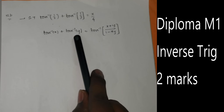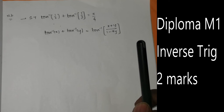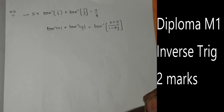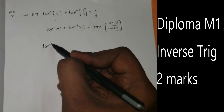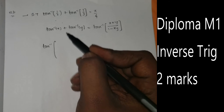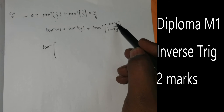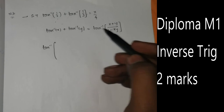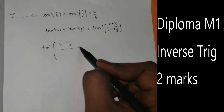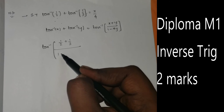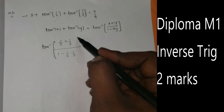The formula is: tan⁻¹(x) plus tan⁻¹(y) equals tan⁻¹ of (x plus y) divided by (1 minus xy). Let's apply this formula.